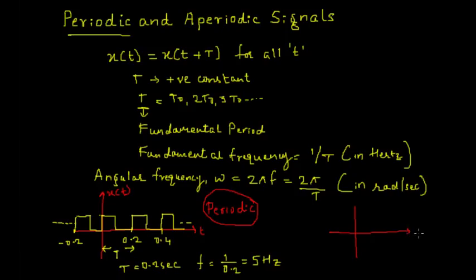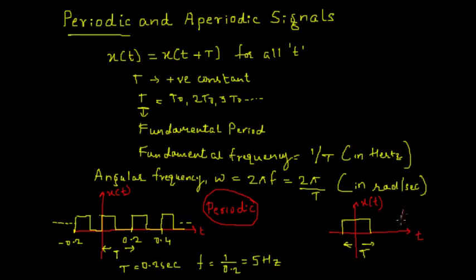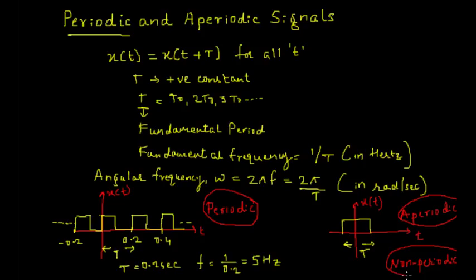Now let me draw another signal where the x-axis represents time t and the y-axis represents a continuous time signal x of t. The signal is a square wave. If we look closely, the signal starts and ends at some point but the pattern does not repeat. These kinds of signals are known as aperiodic signals — there is no repeating pattern. The signal is not repeating itself, so these signals are also called non-periodic signals.